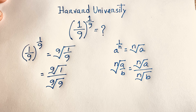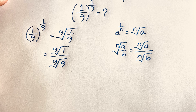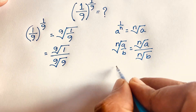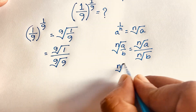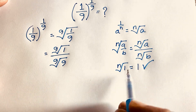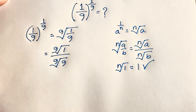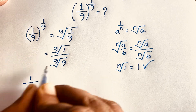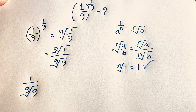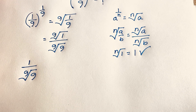Now we know that the n-th root of 1 equals 1. So according to this law, the 9th root of 1 is simply 1. So our expression becomes 1 over the 9th root of 9.